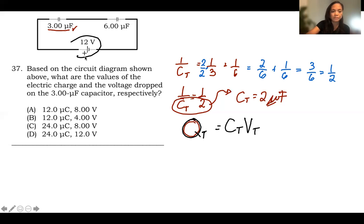The total voltage is 12 volts. So let's just put the values. We have 2 microfarads and 12 volts. That means we have a total charge of 24 microcoulombs. We use letter C as the unit for coulombs.